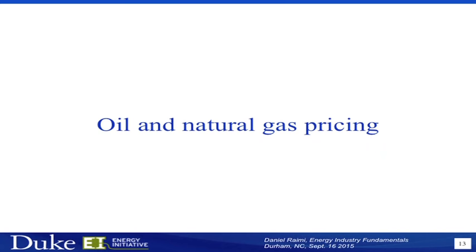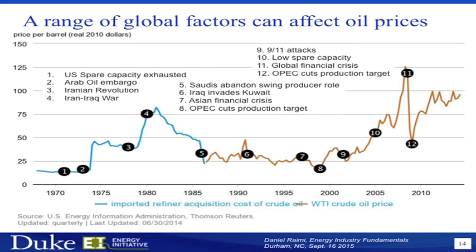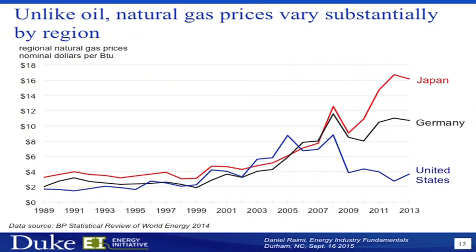On oil and natural gas pricing — this figure shows a variety of changes in the global oil price over time alongside major world events. The point is that events anywhere in the world that affect oil and gas production in one part of the world affect global oil prices. Everyone pretty much pays the same price for oil around the world — disruption in one part of the world affects prices for everyone.